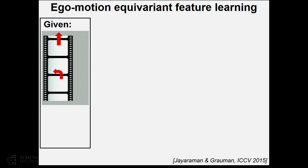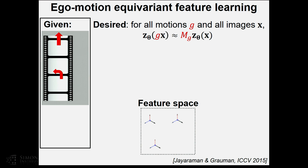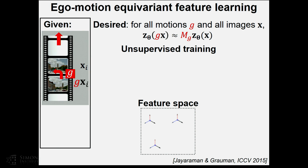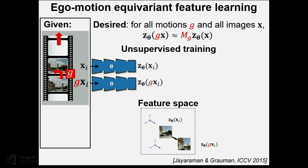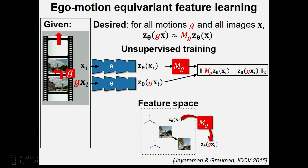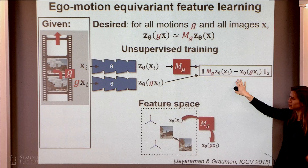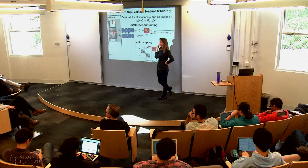The implementation takes unlabeled video together with its 3D ego motions — depicted with red arrows — and produces this equivariant feature space. We need to learn the parameters of function Z as well as matrices M, one for every ego motion G. In unsupervised training, we take pairs of frames; if they're related by the same ego motion, they need to be related by the same mapping M. We implement this with a pair of Siamese embeddings — identical stacks of convolutional neural networks — that pass either frame through, and for the ego motion G relating two views, an additional network takes care of the transformation. The loss is a contrastive loss.